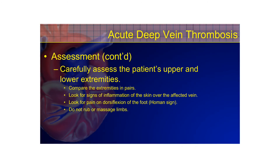Carefully assess the patient's upper and lower extremities, comparing them in pairs when checking pulses. Look for signs of inflammation of the skin over the affected vein. Test for Homan's sign — pain and tenderness of the calf muscle on dorsiflexion — by having the patient push against your hand like pressing a gas pedal while lying flat. Be careful not to rub or massage the affected limb, as you could dislodge the clot and cause a thromboembolism, similar to why post-cardiac cath patients are kept very still.